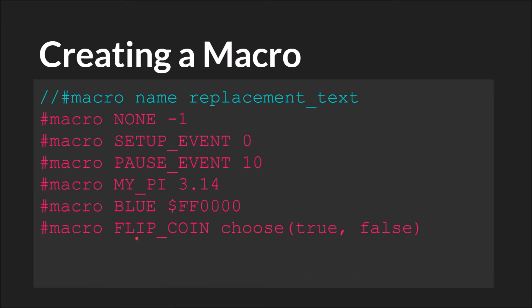FlipCoin is a great example of a more complex expression because it allows you to take this function — choose true or false — which will just return either true or false with a 50/50 percent chance, and turn it into a single phrase.